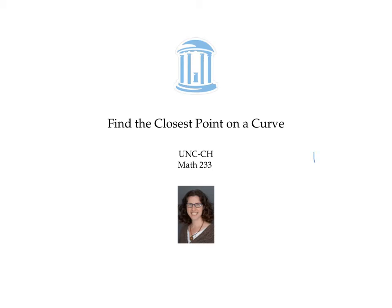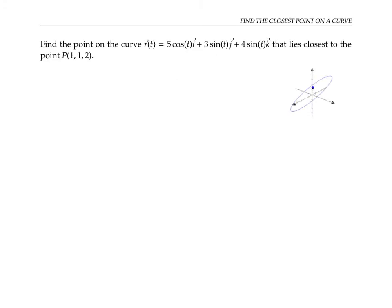In this video, I'll use calculus one techniques to find the point on a curve in three dimensional space that's closest to another given point. We're asked to find the point on the curve given by this vector valued function that lies closest to the given point with coordinates one, one, two. The curve, which turns out to be an ellipse shape, and the given point are graphed here. The point is just slightly off the plane of the ellipse.